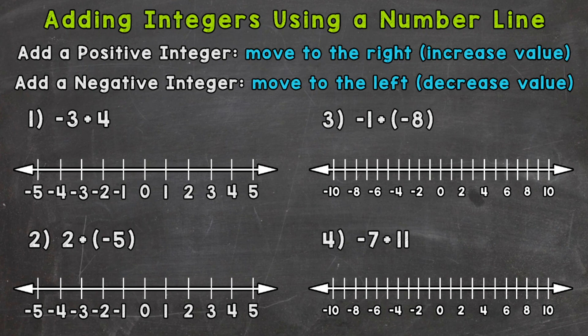A couple of very important points: when we add a positive integer, we move to the right on the number line because we are increasing in value. When we add a negative integer, we move to the left on the number line because we are decreasing in value. A couple of things to keep in mind as we move through these examples.